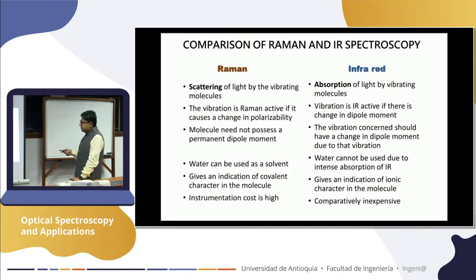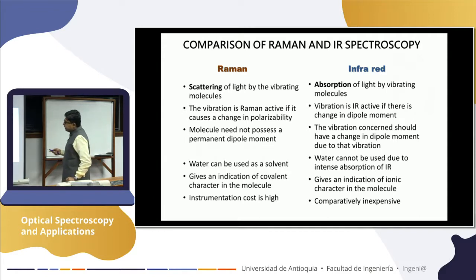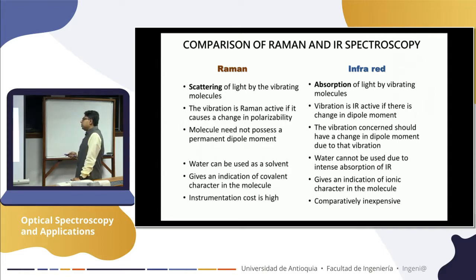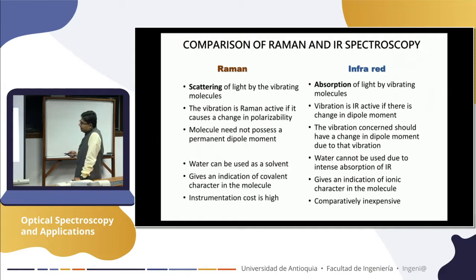In Raman, a vibration is active if it causes a change in polarizability — we are changing the polarizability of the molecule. In contrast, for infrared, we are changing the dipole moment. The molecule does not necessarily need to have a permanent dipole moment to be measured through Raman, because we are simply bouncing photons off the molecules. You don't need a permanent dipole moment for Raman activity.